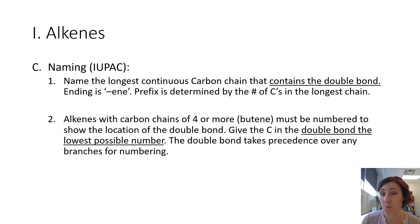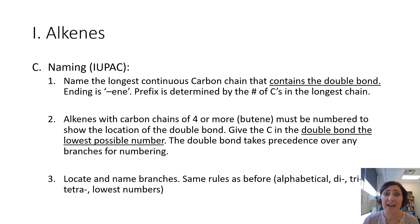So that's going to determine whether you're counting from the left or the right, the top or the bottom. Your double bond takes precedence over any branches for numbering. So if you have alkyl branches like methyl or ethyl, you're going to give priority to the double bond first. If you have a halogen - bromine, fluorine, iodine - again, you're going to give precedence to that double bond. The double bond gets the lowest number possible.